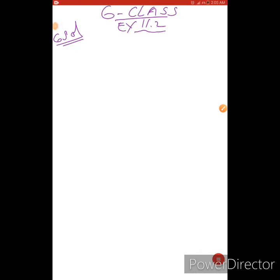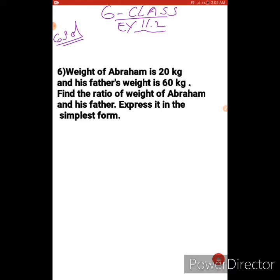Hello students, today we are going to solve exercise 11.2, solution 6. The question is: weight of Abraham is 20 kg and his father's weight is 60 kg. Find the ratio of weight of Abraham and his father. Express it in the simplest form.